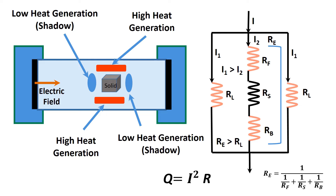We know Q equals I squared R. Therefore, high current flow through the liquid phase with low resistance causes more heat generation in the liquid phase. The low heat generation locations are shown in the diagram.